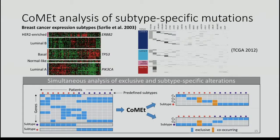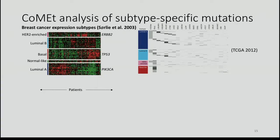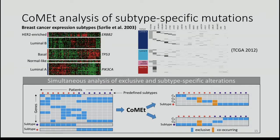I want to conclude with one more vignette about identifying subtype-specific mutations and mutually exclusive mutations simultaneously. Breast cancer samples can be clustered by gene expression into five different subtypes, and TCGA identified mutations associated with particular subtypes. This can confound our analysis because it gives another reason why genes may have mutually exclusive mutations — they might just be mutated in one subtype rather than being in the same pathway.